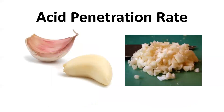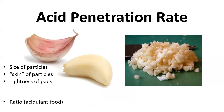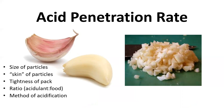Several factors influence the equilibrium pH. Acid penetration rates must be considered when acidifying large particles, tightly packed particles, or particles with coatings that may be difficult for the acid to penetrate. The trusted recipe sources that we use all do testing to ensure that the equilibrium pH of all the particles of food in a pickled product is below 4.6. That is why we can't just change the ratio of our ingredients in our recipes or switch, for example, to a clove of garlic when the recipe calls for chopped garlic.